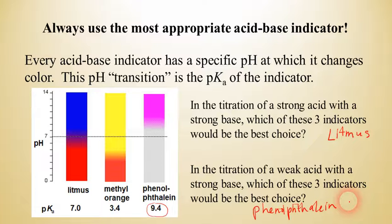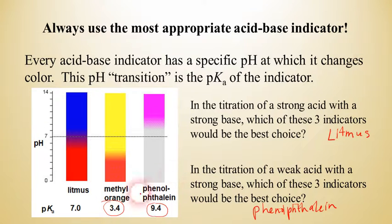Always use the best indicator for what you're working with. If you have a strong acid and a weak base titration, the equivalence point would be acidic, and you might use methyl orange in that case.